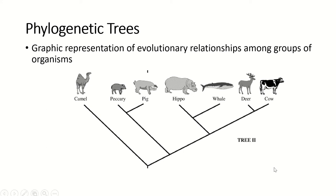When we draw a phylogenetic tree, what we're trying to show is which organisms are more closely related to which others, and what might have been the common ancestor. In this case, the camel is what we call an outgroup.